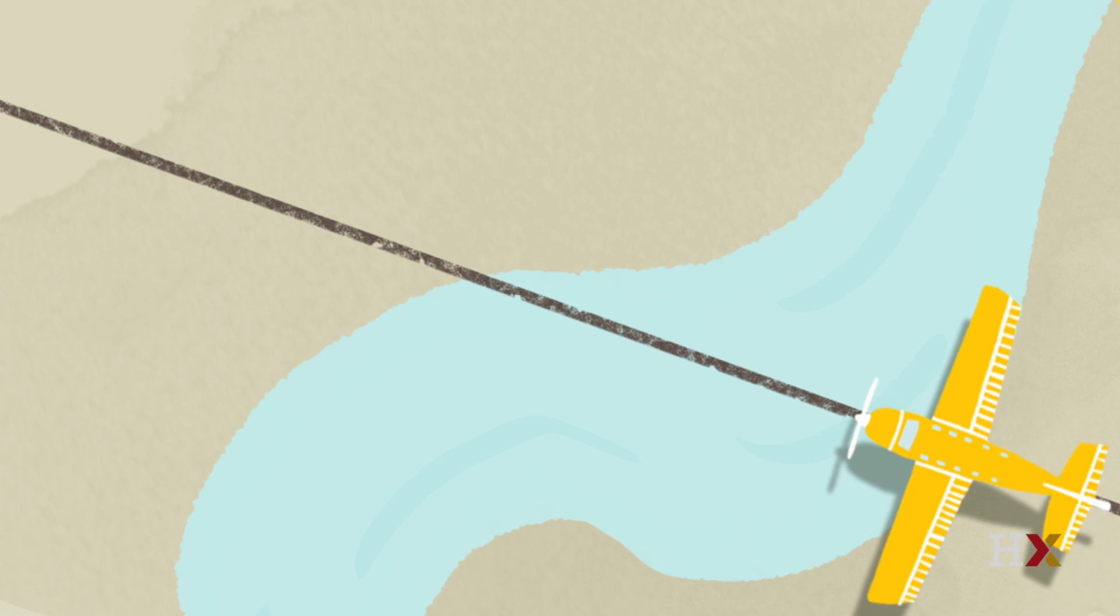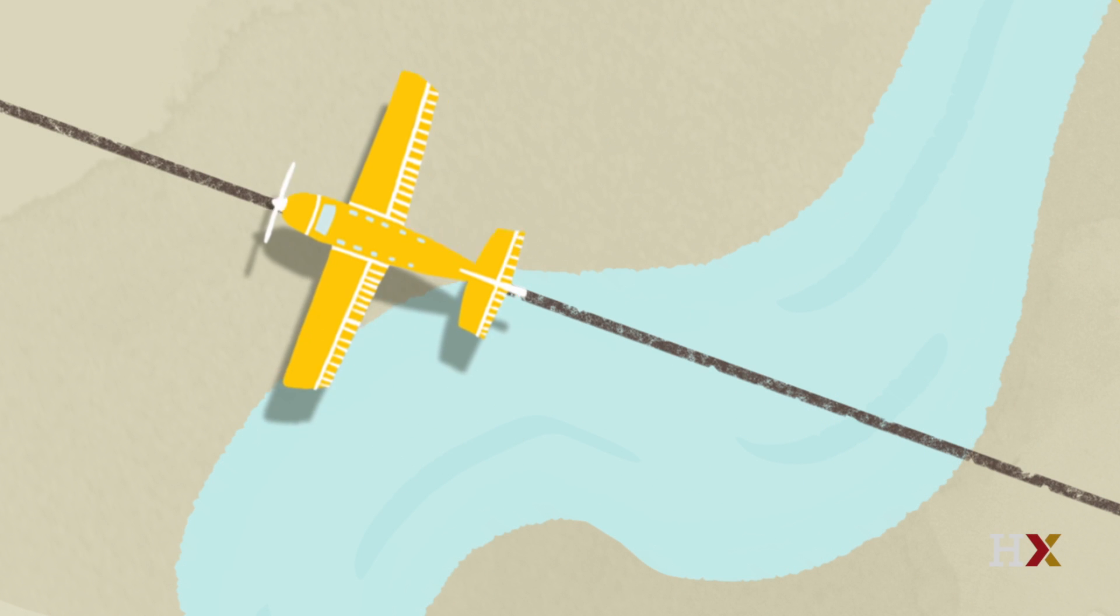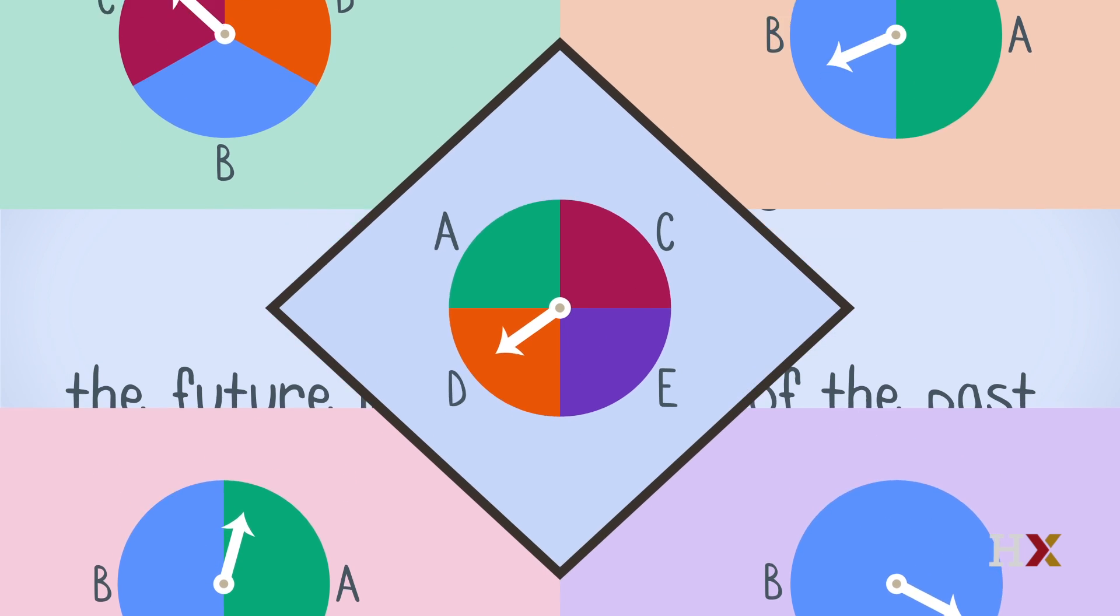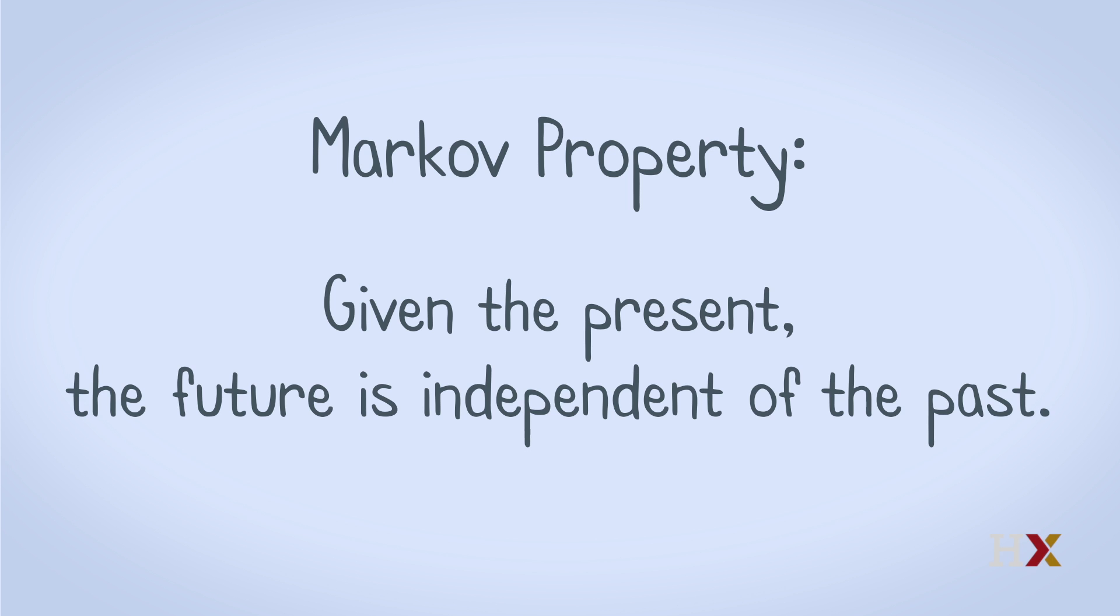The process that Anna is following is an important example of a Markov chain. The Markov property means that at each time point, determining the next city that Anna will go to depends only on where she currently is and the randomness of her spinner. Given the present, the future is independent of the past.